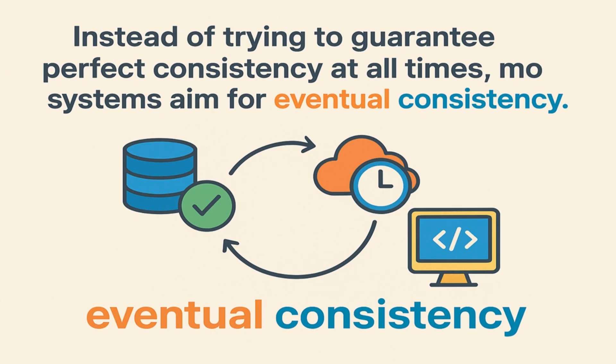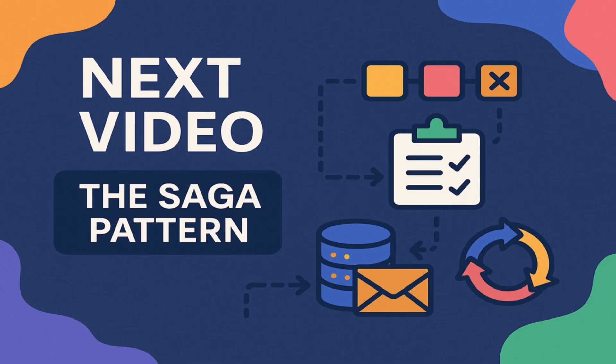Once you understand this mindset, you are ready to learn the most practical implementation: the Saga design pattern, where services use local transactions and compensate when things go wrong. That's exactly what we are going to learn next.